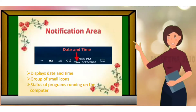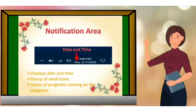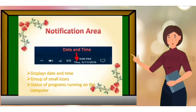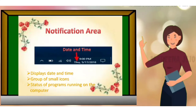Notification Area: Don't you watch time and day on a computer? The desktop has a notification area which displays date and time and contains a group of small icons that tell us about the status of some programs running on the computer.